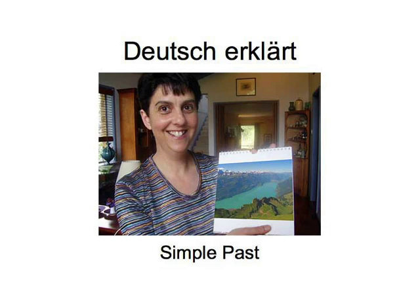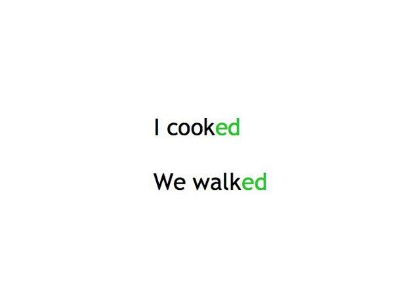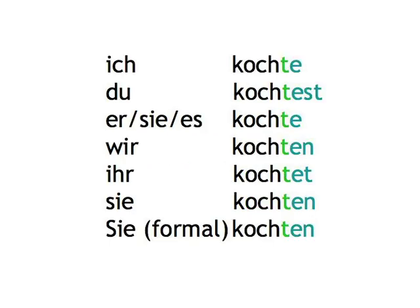The formation of the German simple past is very similar to the way it's done in English, where we take the stem of the verb and add the ending 'ed', as in 'I cooked', 'we walked'. In German, you simply squeeze a T between the stem and the normal present tense verb ending, and you get: ich kochte, du kochtest, er kochte, sie kochte, es kochte, wir kochten, ihr kochtet, sie kochten, und Sie kochten — formal.